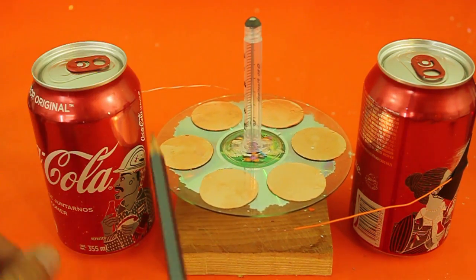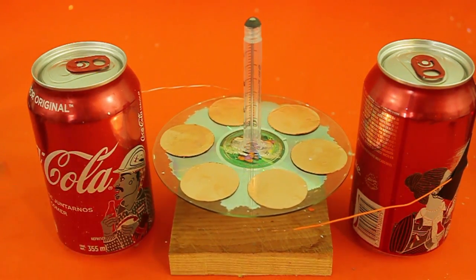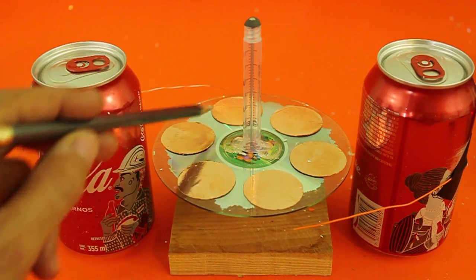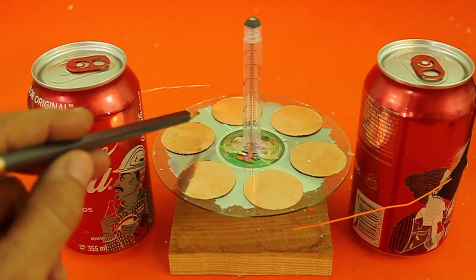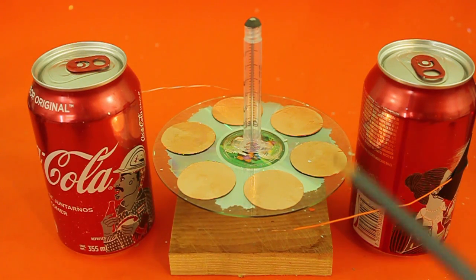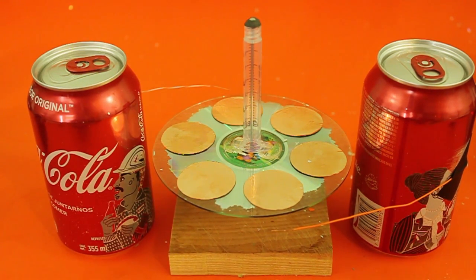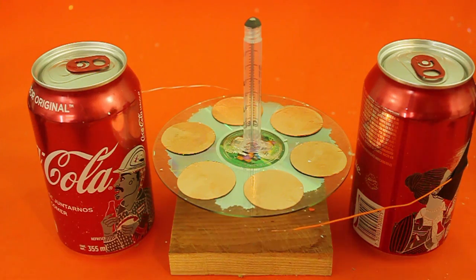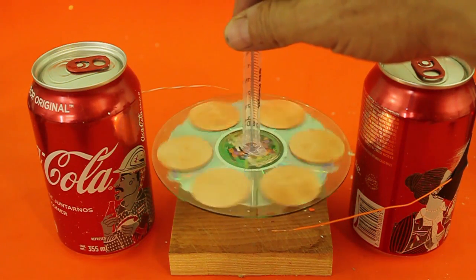At the other side, we have the same effect. These disks are negatively charged and are repelled from the negative can and attracted to the positive can. So, the net effect is that the disk spins in this way.